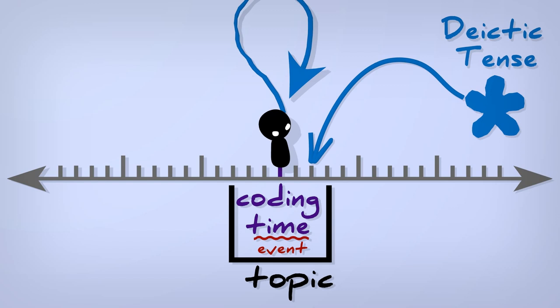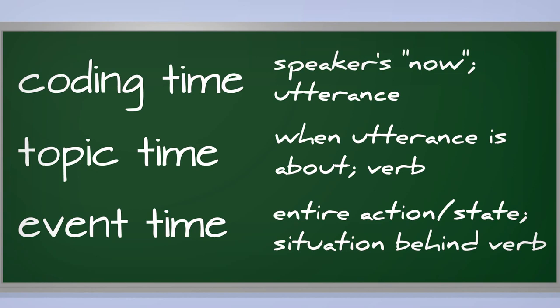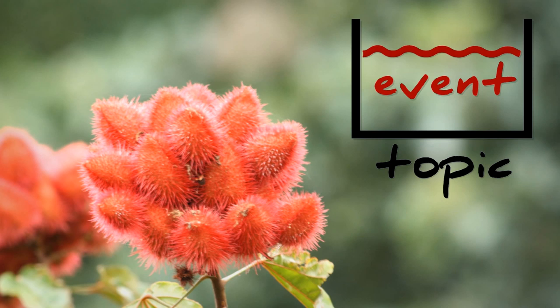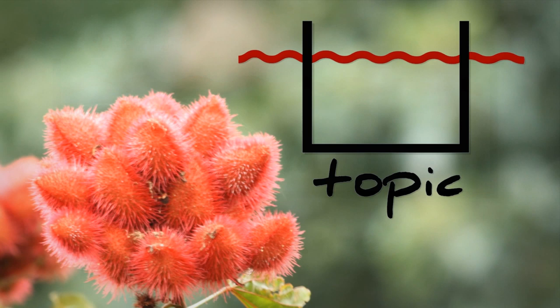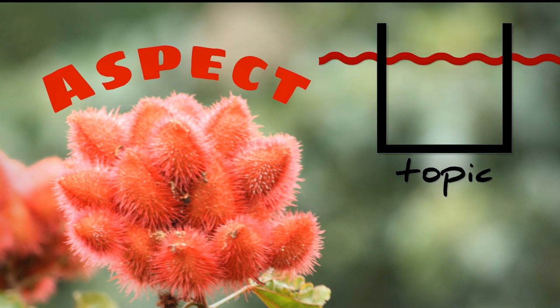Imagine, instead, you aren't concerned with when a talker is talking, but you're more interested in the action itself. You zoom in and you look at the relationship between an event and the slice of the event that's the current topic of conversation. What's the flow of the eating in the topic time window? Is it ongoing? Did it start? Did it stop? Now you're thinking with aspect.